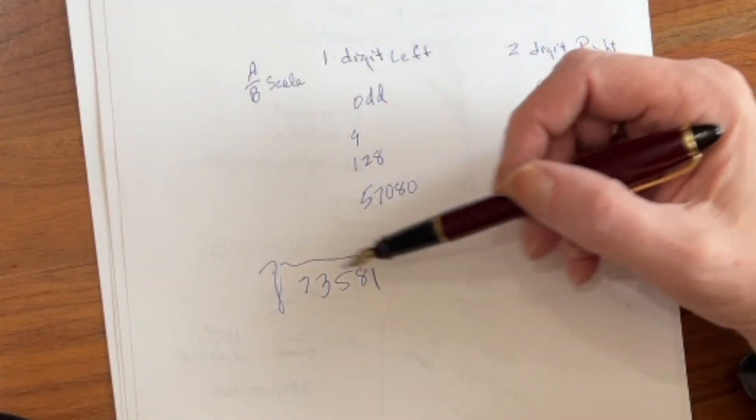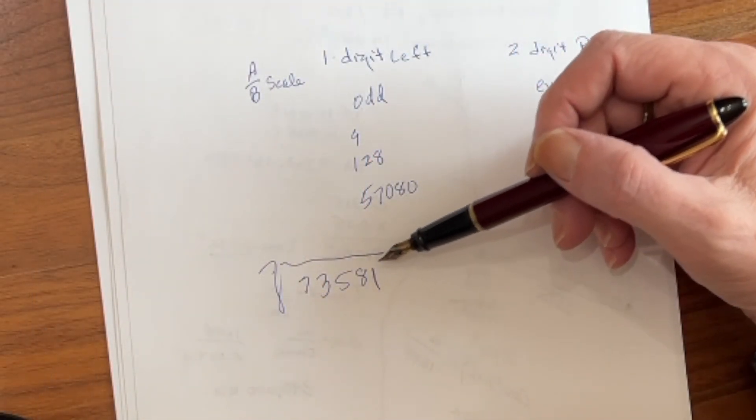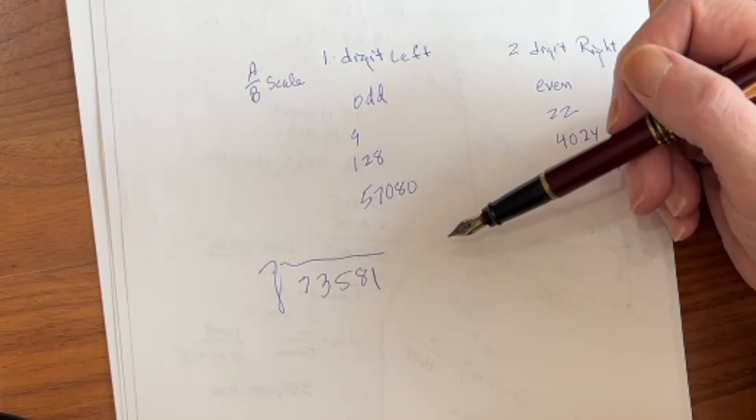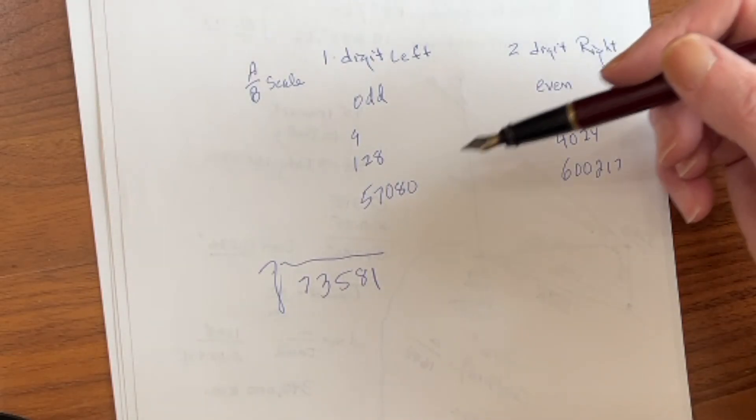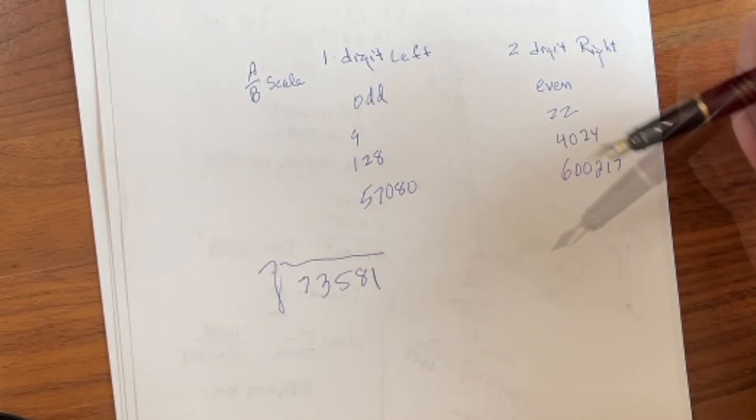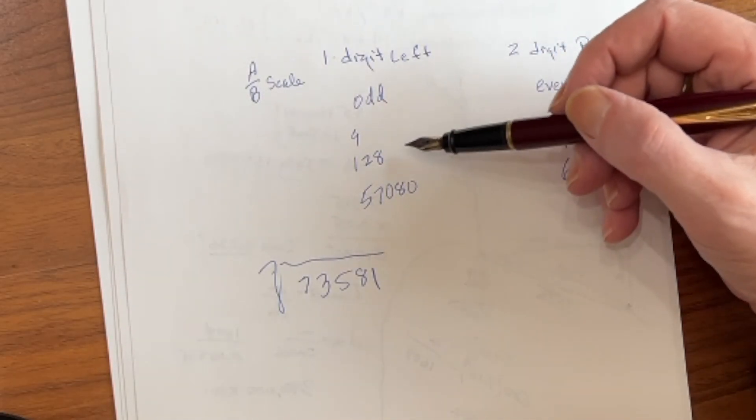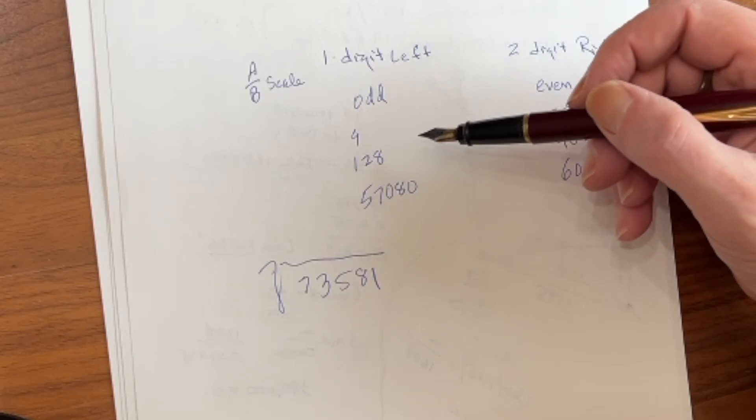Now, one major problem that you run into is these numbers start getting big, and then you start worrying about where are you going to put the decimal place. Well, fortunately, there's a very useful trick that you can use to solve that. Let me show it to you. Let's look at the square root of an enormous number, 73,581. How would you approach this? Well, first of all, 1, 2, 3, 4, 5. It's an odd number of digits, so it'll be solved on the left side of the A-B scale.